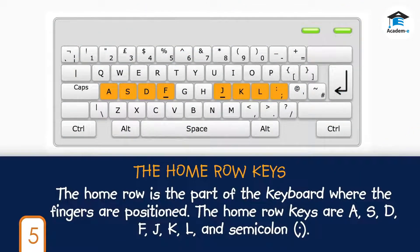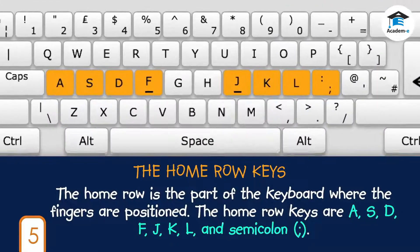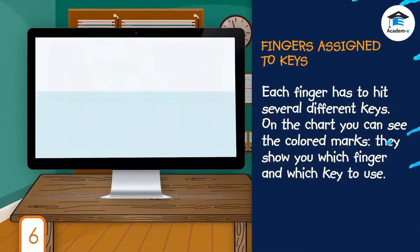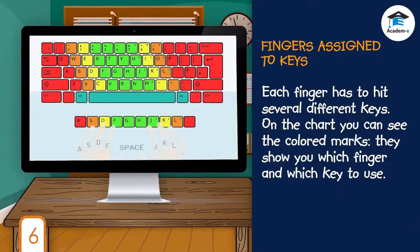The home row keys: The home row is the part of the keyboard where the fingers are positioned. The home row keys are A, S, D, F, J, K, L, and semicolon.